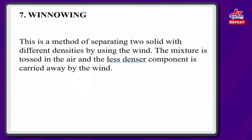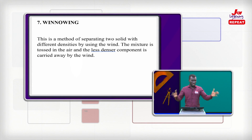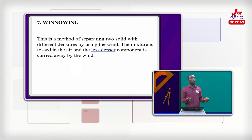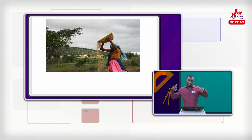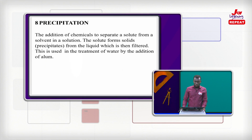Winnowing is a method of separating two solids of different densities by using the wind. The mixture is tossed in the air and the less dense component is carried away by the wind. This is commonly used at home — for example, if there is chaff or debris mixed with maize or corn, you put it in a flat container, toss it, and blow air through it. The lighter particles are carried away by the wind, leaving the heavier grain. In the diagram, a woman pours cereals from a height and the wind blows the husk and debris away.